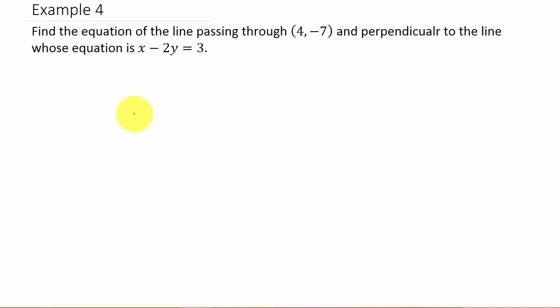Alright so let's look at that. Well it tells us that the line we're looking for is perpendicular to this one. So that means the slope of our line is the negative reciprocal of the slope of this line. So in other words if two lines are perpendicular their slopes are negative reciprocals of each other.